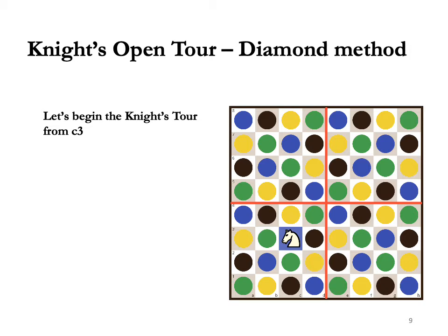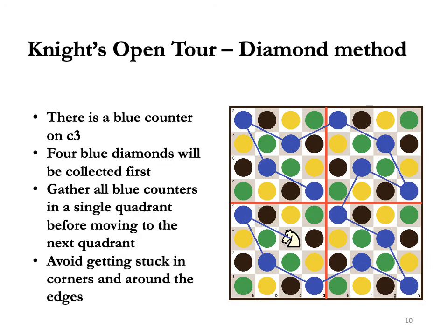Let's begin the knight's tour from C3. We could have picked any other square — the diamond method works equally well from any starting square. There is a blue counter on C3, so blue diamonds will be collected first from the board. There are four blue diamonds, one in each quadrant. Gather them one by one, moving from quadrant to quadrant. Avoid getting stuck in corners and around the edges. For example, the last three counters were collected by the moves knight to a8, b6, d5. It would have been a mistake to try the other way around by knight d5, b6 to a8, as the knight would not have been able to leave the a8 corner.